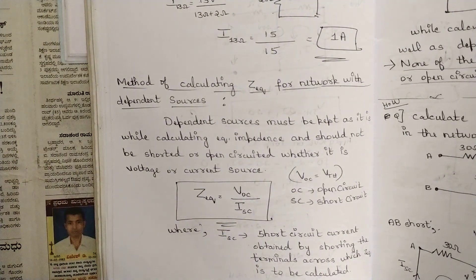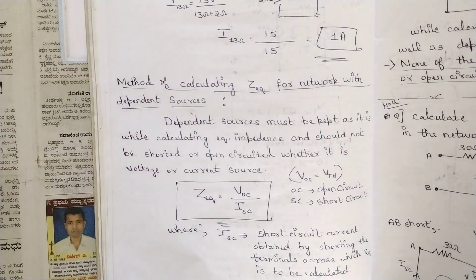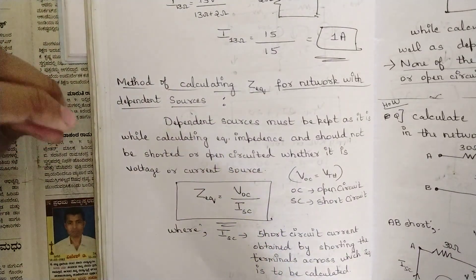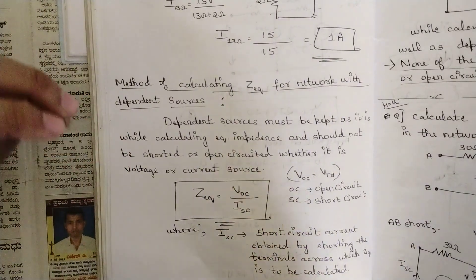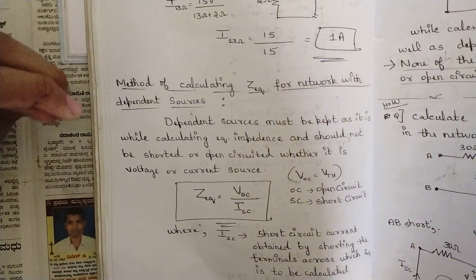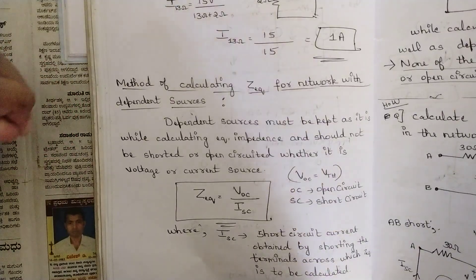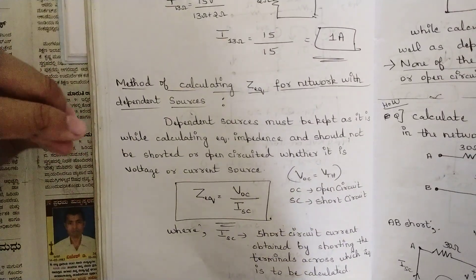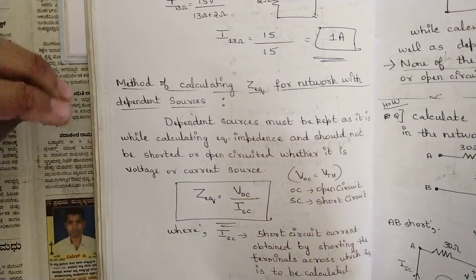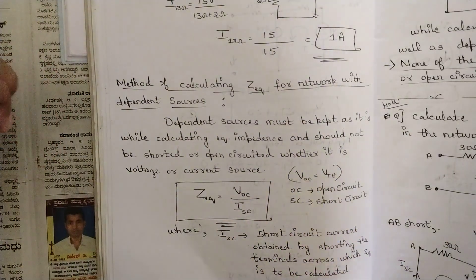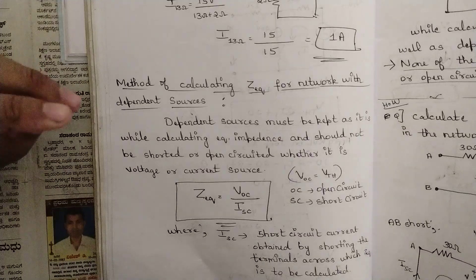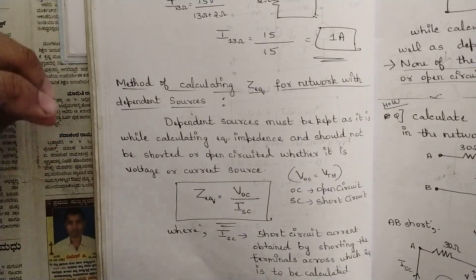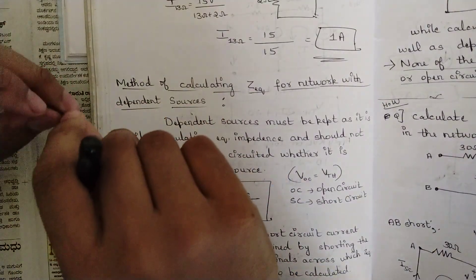I'm going to explain that and then solve one problem involving a dependent source. For Thevenin's theorem, there is one change: in the Z-equivalent calculation, the method remains the same for Vth, but Z-equivalent is not calculated by simply removing sources. We cannot remove dependent sources — as seen in the superposition theorem, we should not be touching dependent sources and cannot short-circuit or open-circuit them.